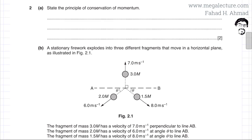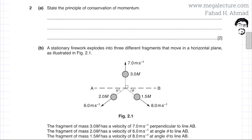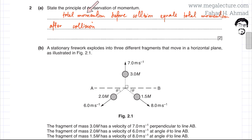The first part of the question asks you to state the principle of conservation of momentum. The principle states that the total momentum before a collision is equal to the total momentum after a collision. So: total momentum before collision equals total momentum after collision.